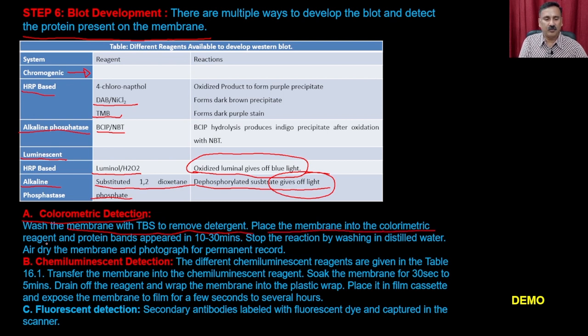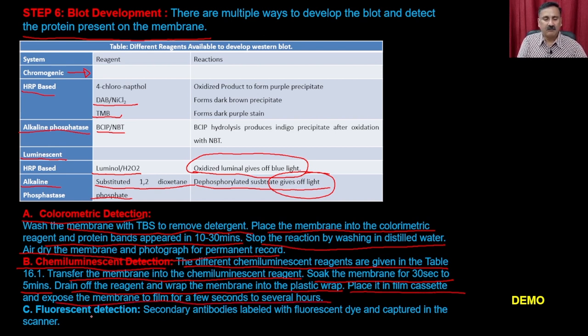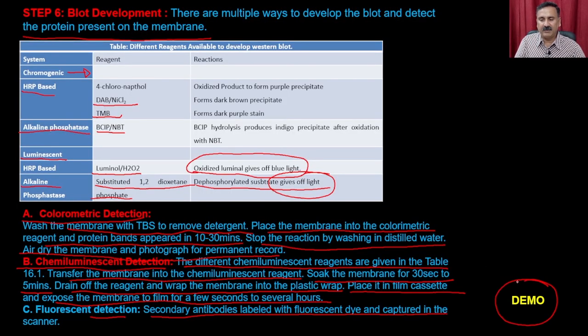For colorimetric detection, wash the membrane with TBS to remove the detergent, place the membrane in the chromogenic reagent, and protein bands appear in 10 to 30 minutes. Stop the reaction by washing in distilled water, air-dry the membrane, and photograph for a permanent record. For chemiluminescent detection, transfer the membrane into the chemiluminescent reagent, soak for 30 seconds to 2-5 minutes, drain off the reagent, and wrap the membrane in plastic wrap. Place it in a cassette and expose it to film for a few seconds to four hours. Fluorescent detection using secondary antibodies labeled with fluorescent dye can also be used, and the signal is captured with a scanner.